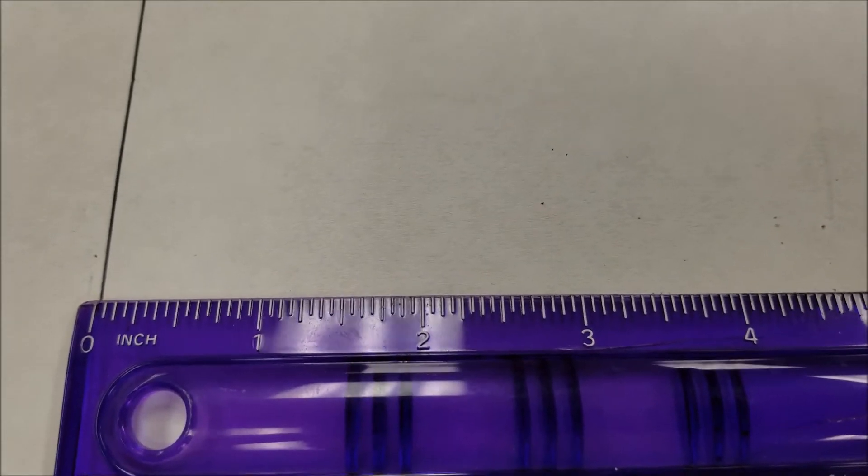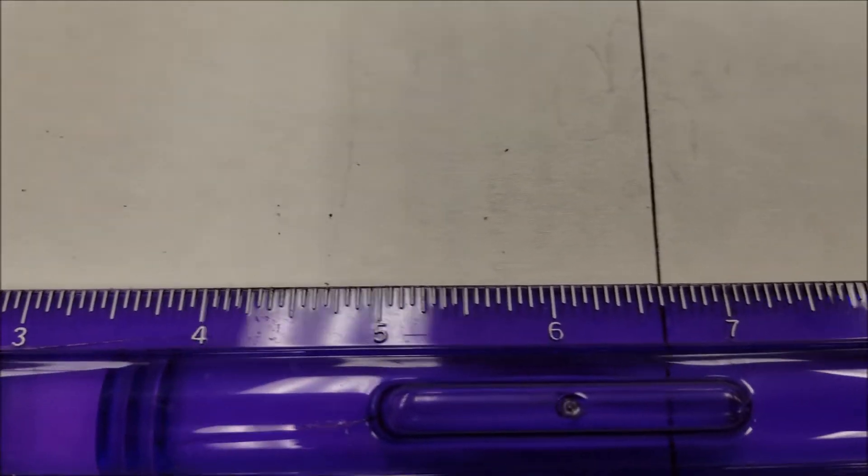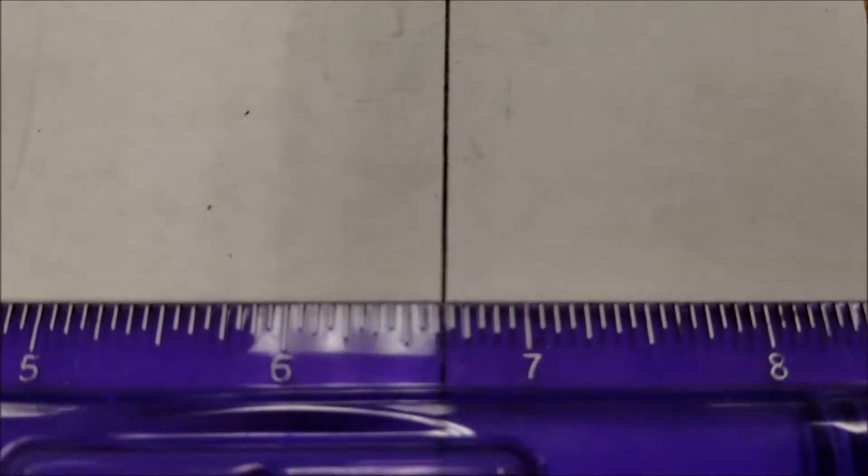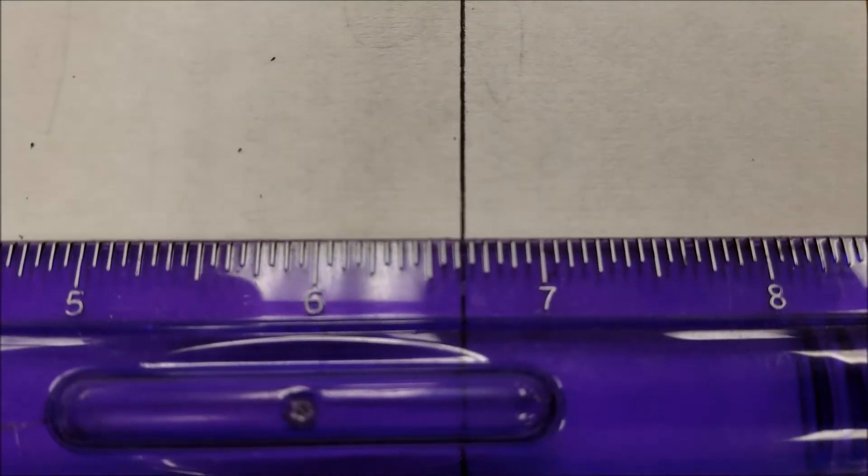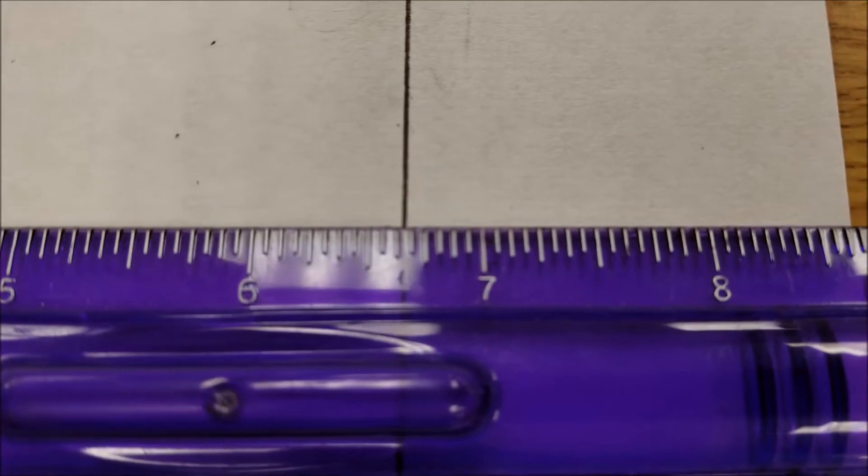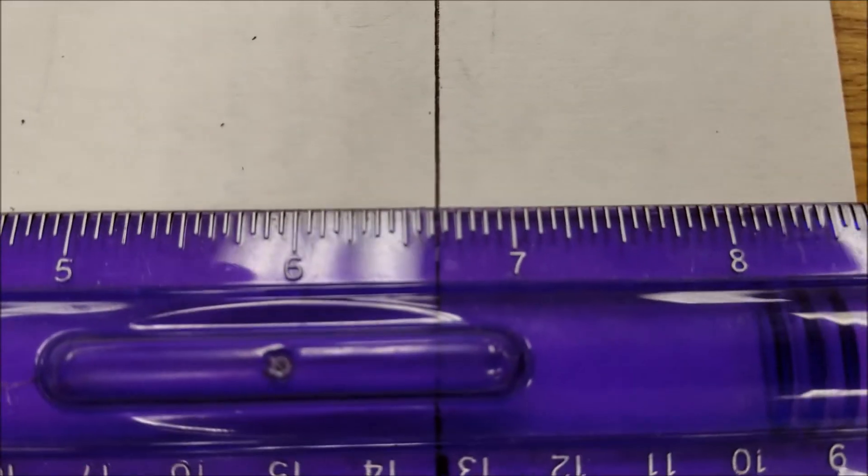So here we go. 1 inch, 2 inch, 3 inches, 4 inches, 5 inches. There's the 6 inches. I guess if it was more to be 0.28, it would have been more closer to the 1/4 mark here.